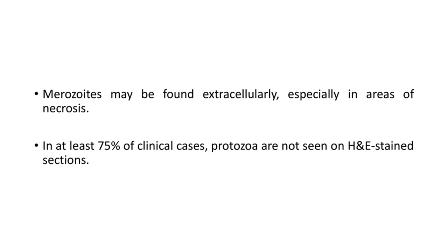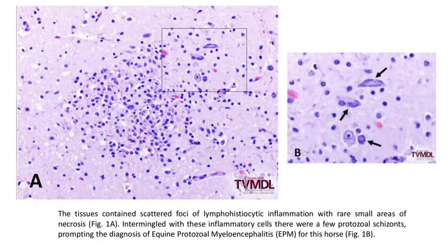In the histopathological sample, picture A shows tissues containing scattered foci of lymphohistiocytic inflammation with rare small areas of necrosis. In picture B, intermingled with these inflammatory cells, there are a few protozoal schizonts marked by arrows, prompting the diagnosis of EPM.